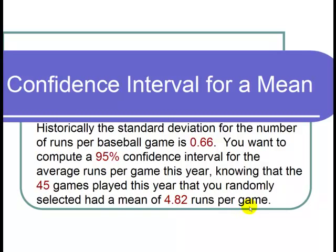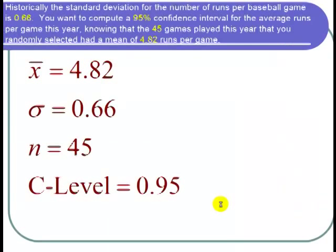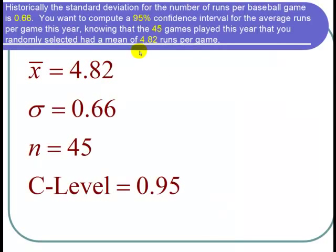So let's start by writing down the cast of characters. Since the mean of our sample was 4.82 runs per game, x̄ = 4.82. Since the standard deviation historically, that means for all games, is 0.66, this is the population standard deviation, so σ = 0.66.